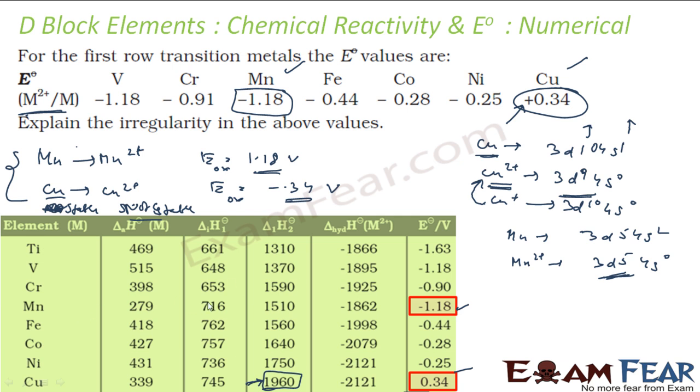If you talk about Mn, Mn⁺ electronic configuration is 3d⁵ 4s¹, and from this you are making Mn²⁺ which is 3d⁵ 4s⁰. This is more stable. So it has a very less value. 1510 has a very, very less value actually. Typically as we go down the group, the second ionization energy increases. But for manganese it has decreased, and for copper it has increased a lot. That's why there is a variation here.